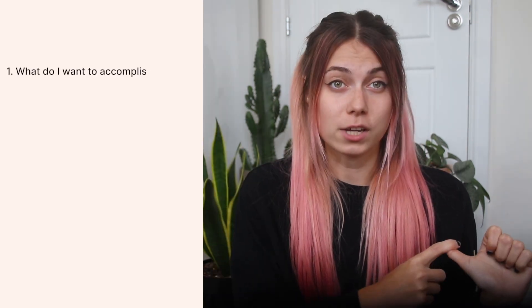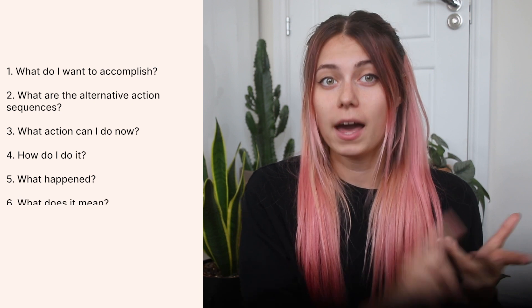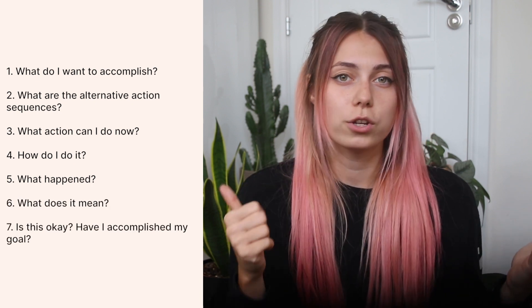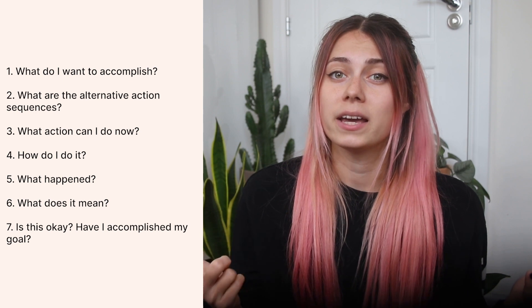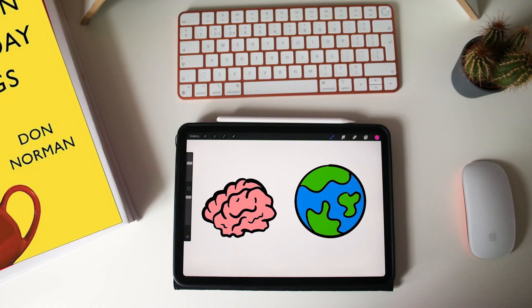The seven-stage model of action cycle provides a checklist for design consideration. Each stage requires specific strategies and carries potential for mishaps. The key questions are: What do I want to accomplish? What are the alternative action sequences? What action can I do now? How do I do it? What happened? What does it mean? Is it okay? Have I accomplished my goal?